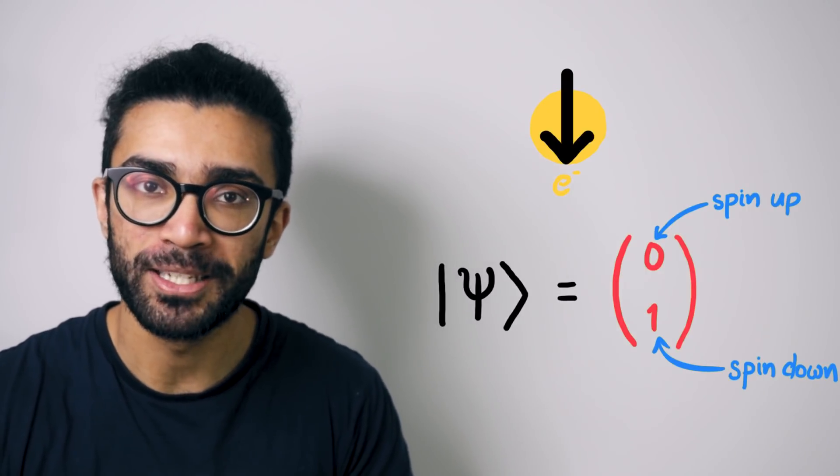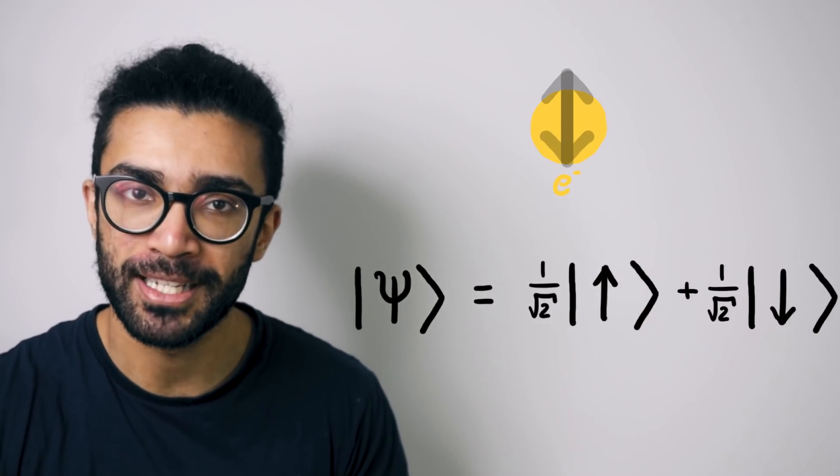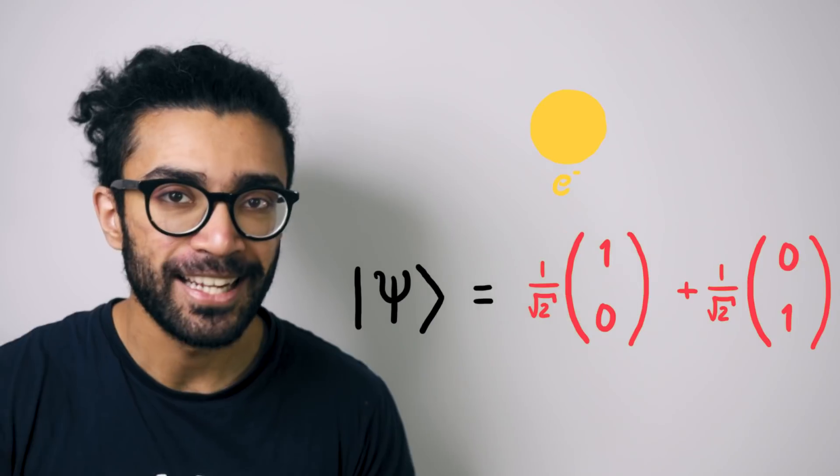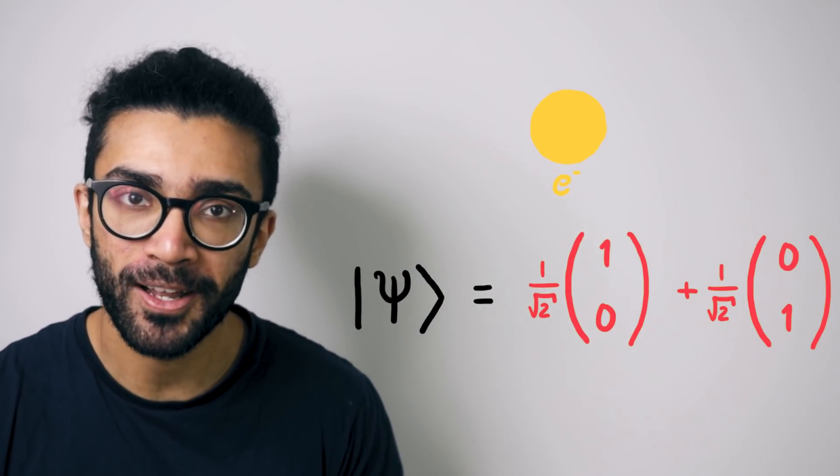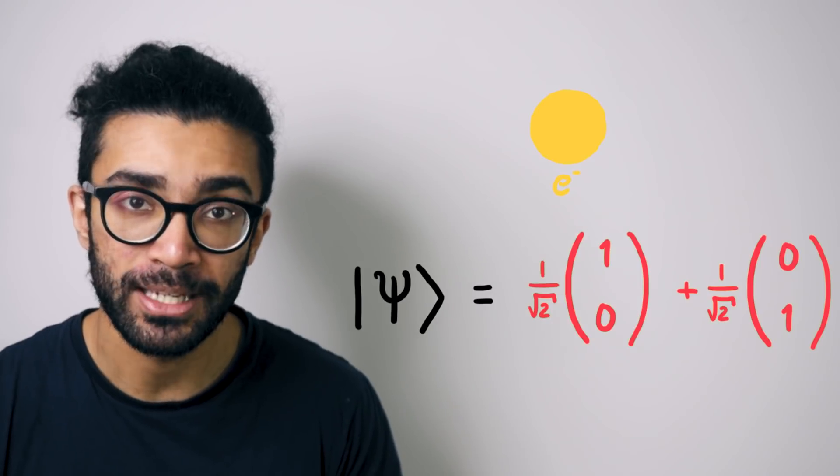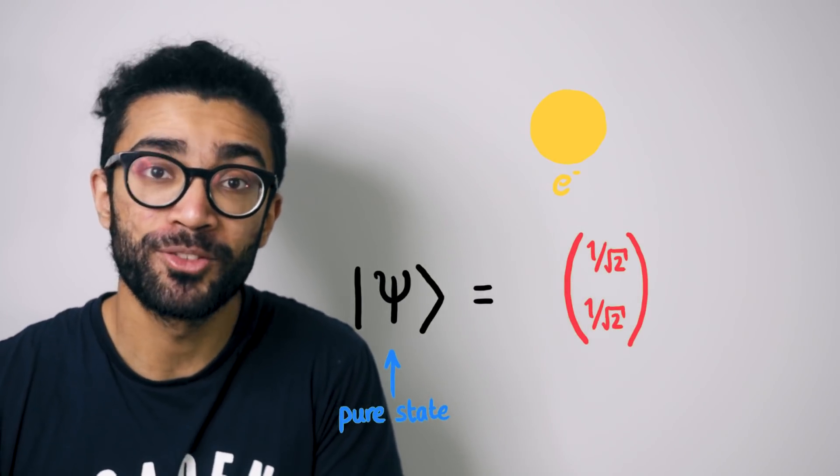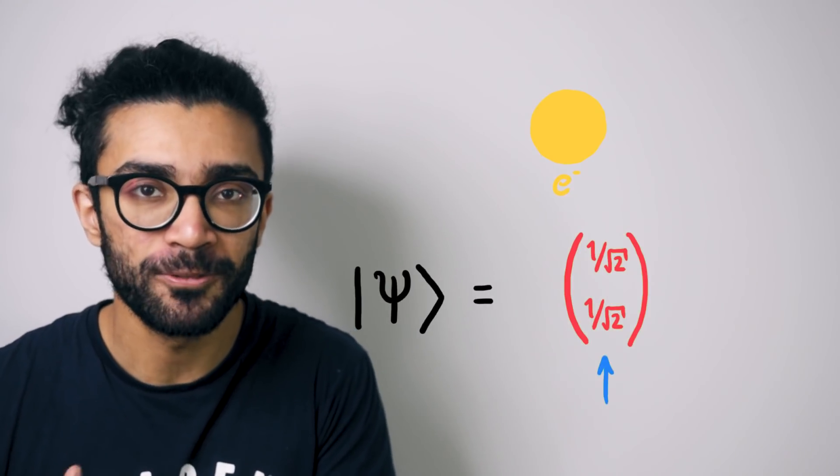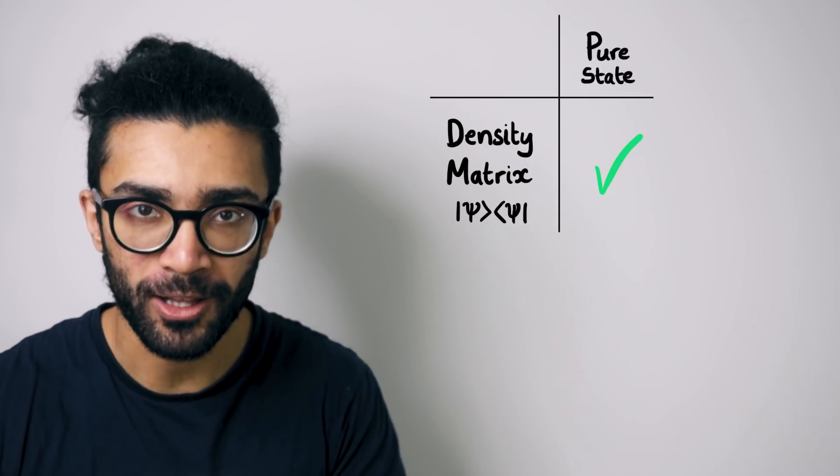So if we want to write a system in a superposition of spin-up and spin-down, like this one from earlier, then the vector representation would look like this. And again, the 1 over square root 2s are just there to make sure that the probability of finding our electron in one of these states is 1. Now this is a pure state, remember, because we can represent it with just a single wave function or a single vector.